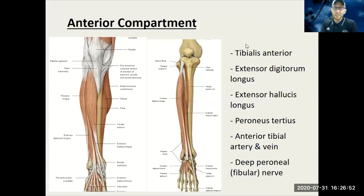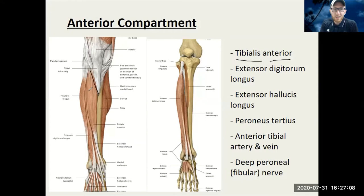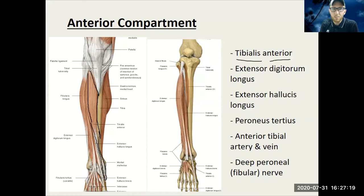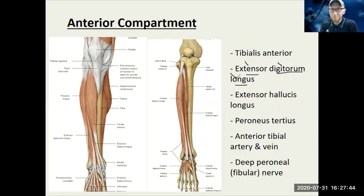The anterior compartment has a few large muscles, including some that go to the toes themselves. First, tibialis anterior — it's attached anteriorly on the tibia and goes all the way down to the first metatarsal. Remember: tarsals in the feet, carpals in the hands. Something like the extensor digitorum longus will extend the digits, and extensor hallucis longus — hallux being the big toe — will extend the big toe.